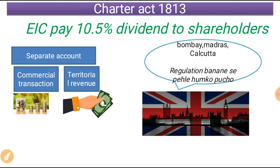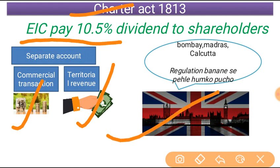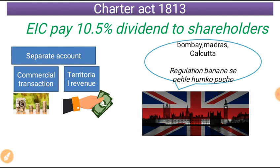In the Spectrum book, three extra points are given for Charter Act 1813: the East India Company had to pay 10.5% dividend to shareholders; a separate account had to be maintained for commercial transactions and territorial revenue; and the Presidencies of Bombay, Madras, and Calcutta were told that before making any regulation, they needed prior permission and approval — from the British Parliament.